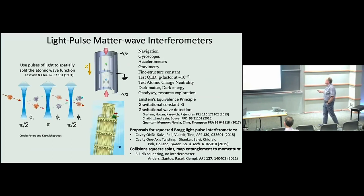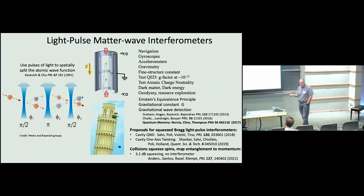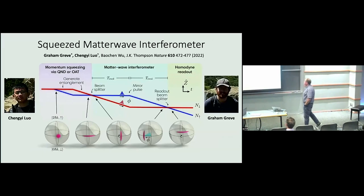In the context of going towards squeezed interferometers, there have been proposals from Tino's group and Murray Holland's group. There was work using collisions between atoms to create squeezing in the spin degree of freedom, then using Raman transitions to map that entanglement to momentum states. They could see entanglement involving the momentum states, but couldn't run an interferometer with it and see improved interferometer performance. That's what we set out to do — and this work was led by Chengyi Luo and Graham Greve, who pulled off a very hard experiment.